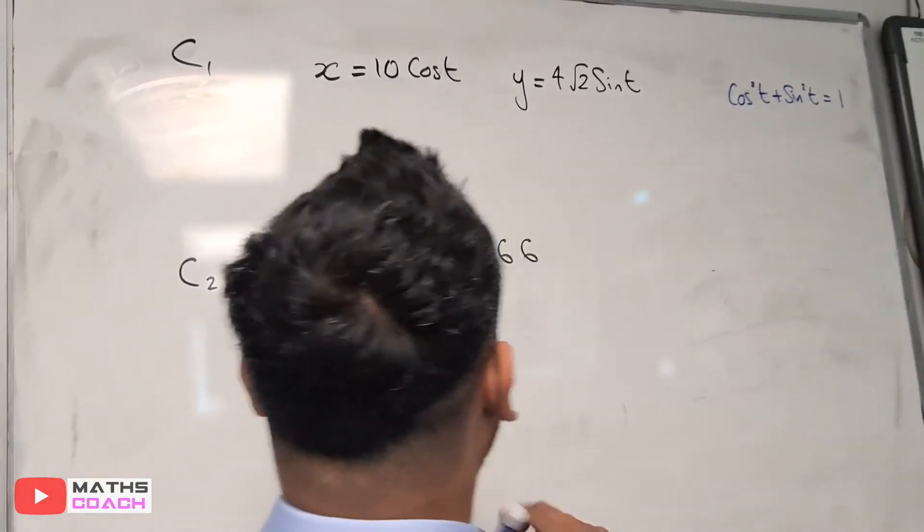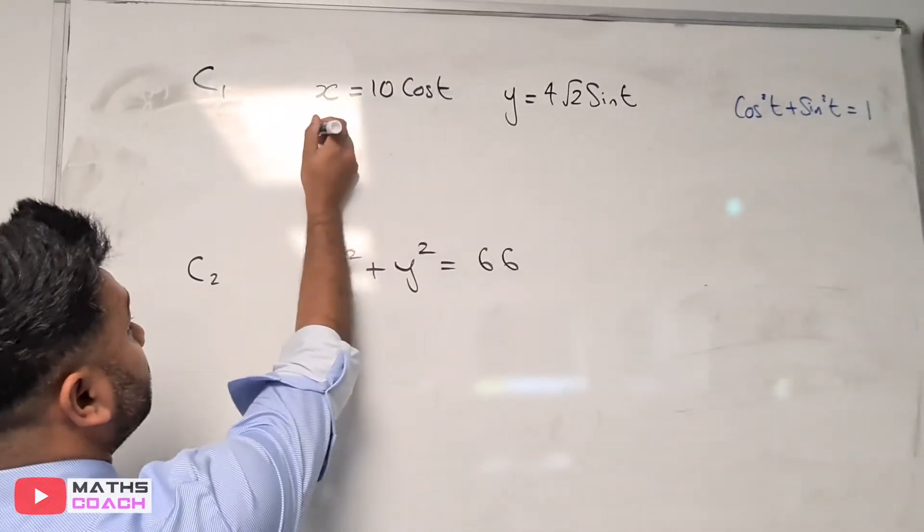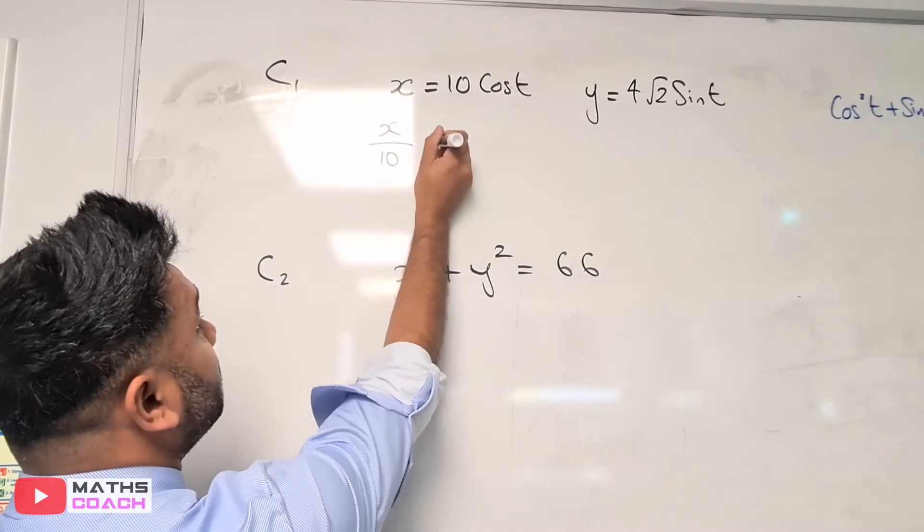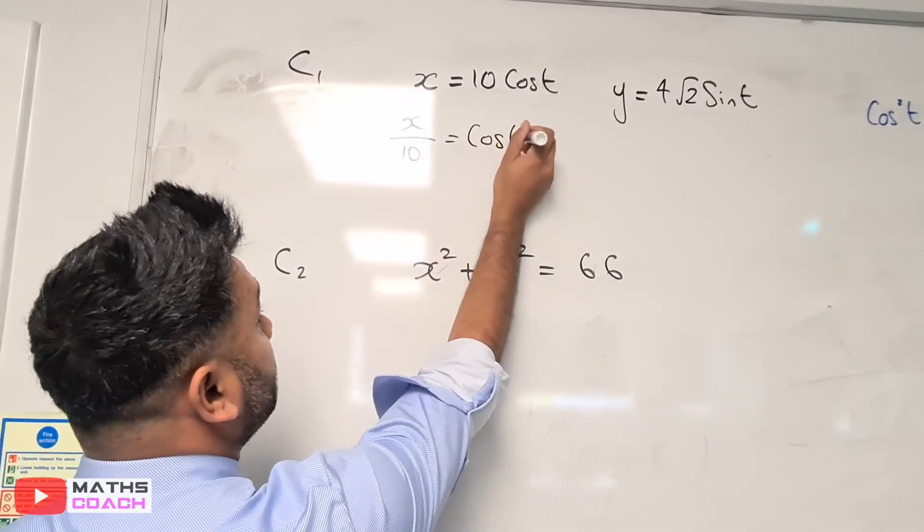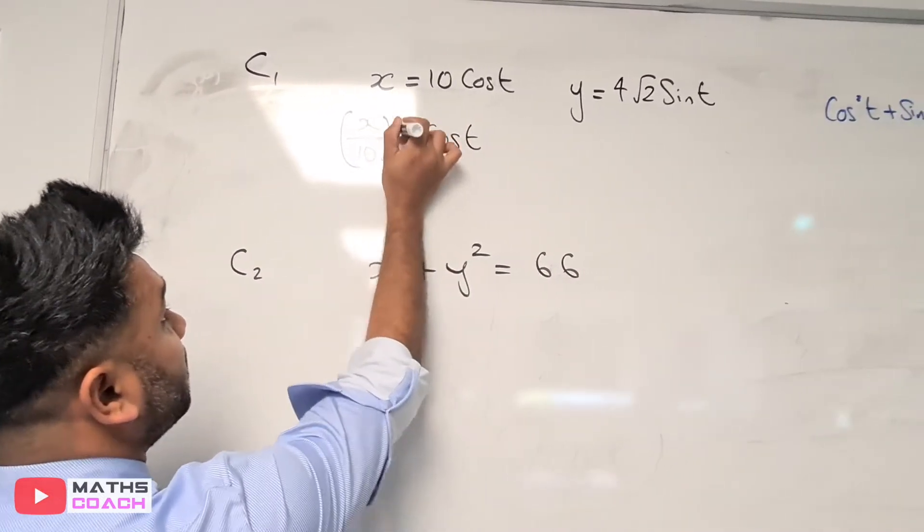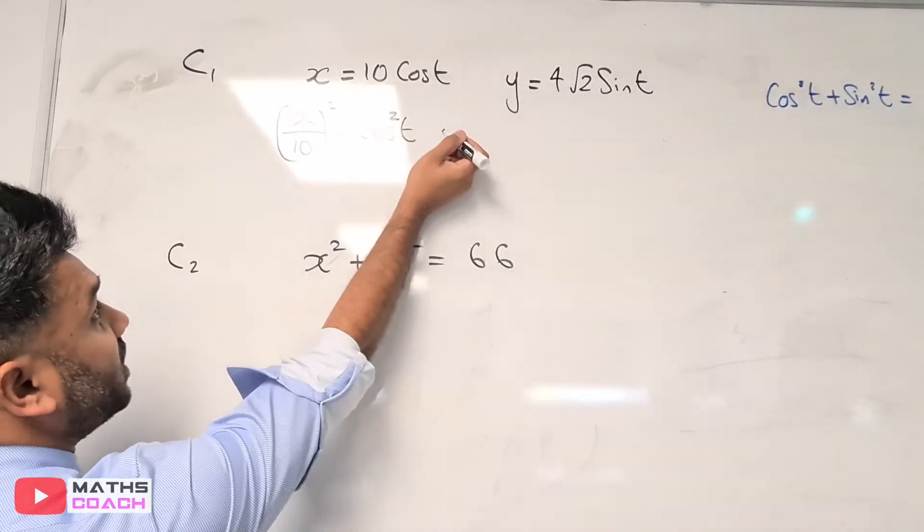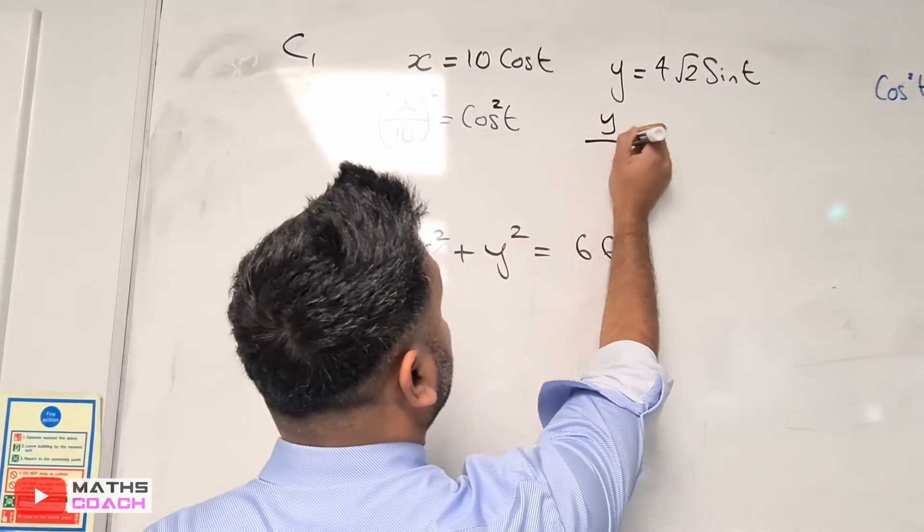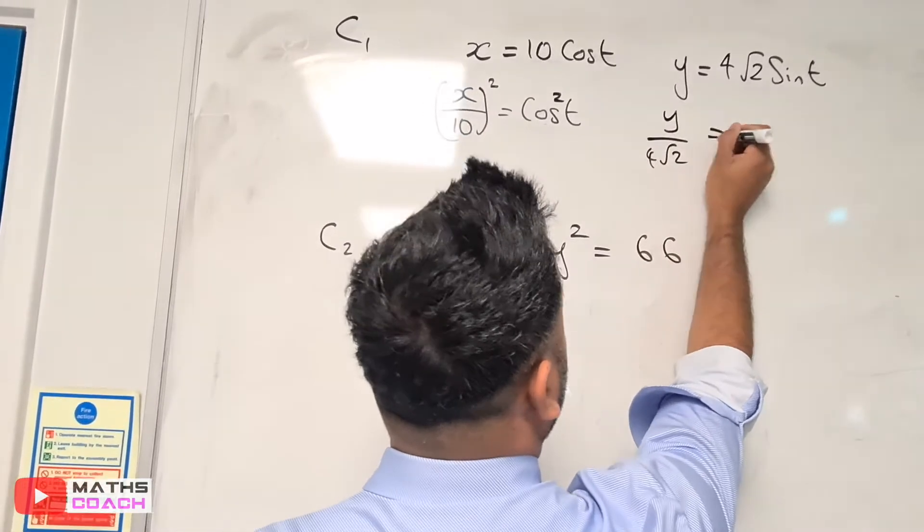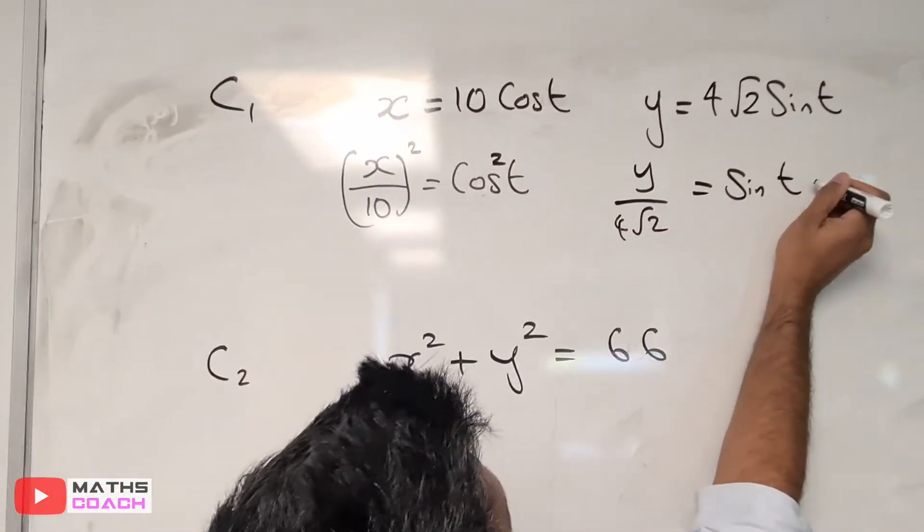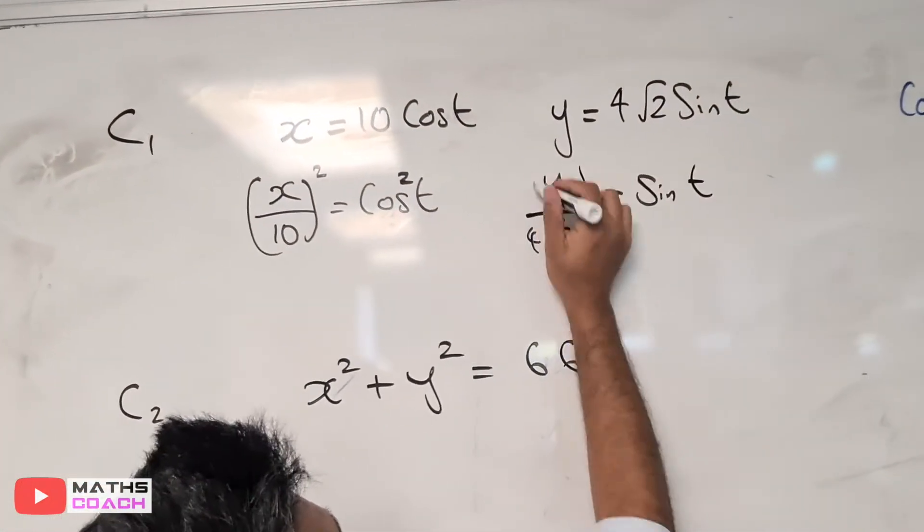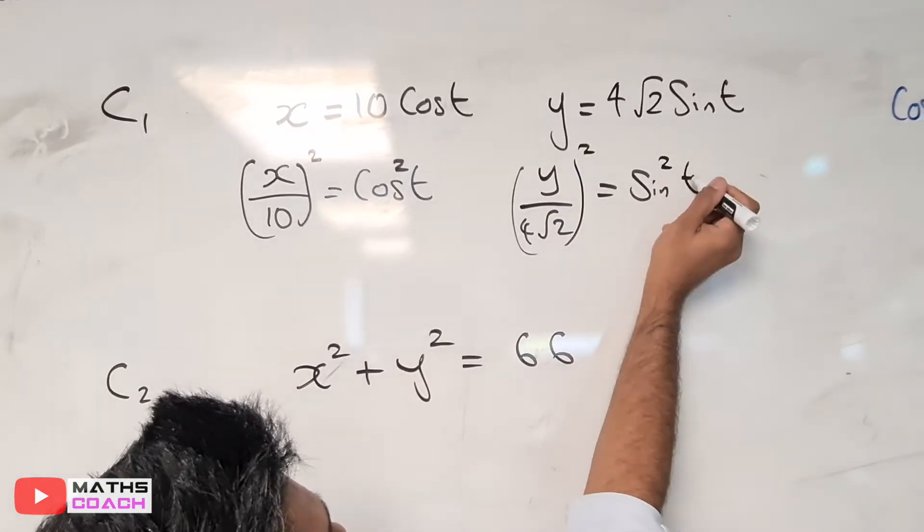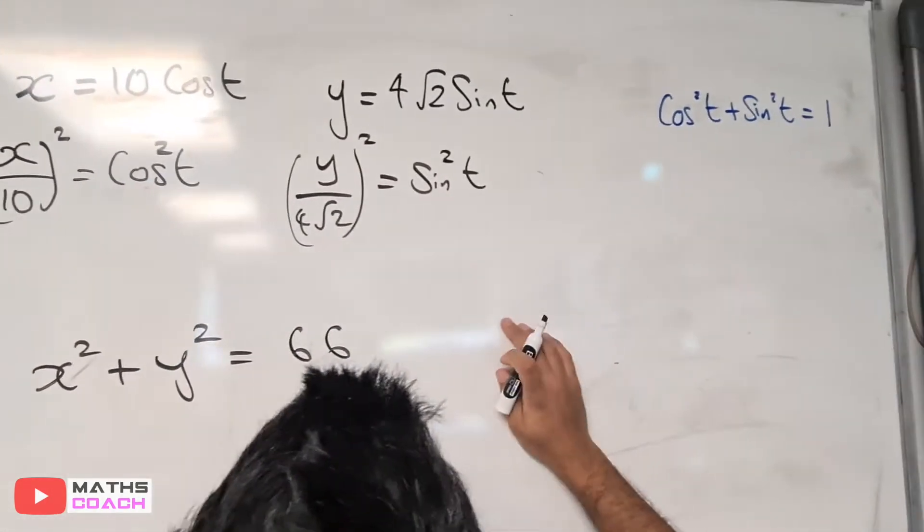Making cos the subject, we have x/10 = cos t. If we square this, we get cos²t. Here we have y/(4√2) = sin t. Squaring this gives us sin²t. We know that cos²t + sin²t = 1.